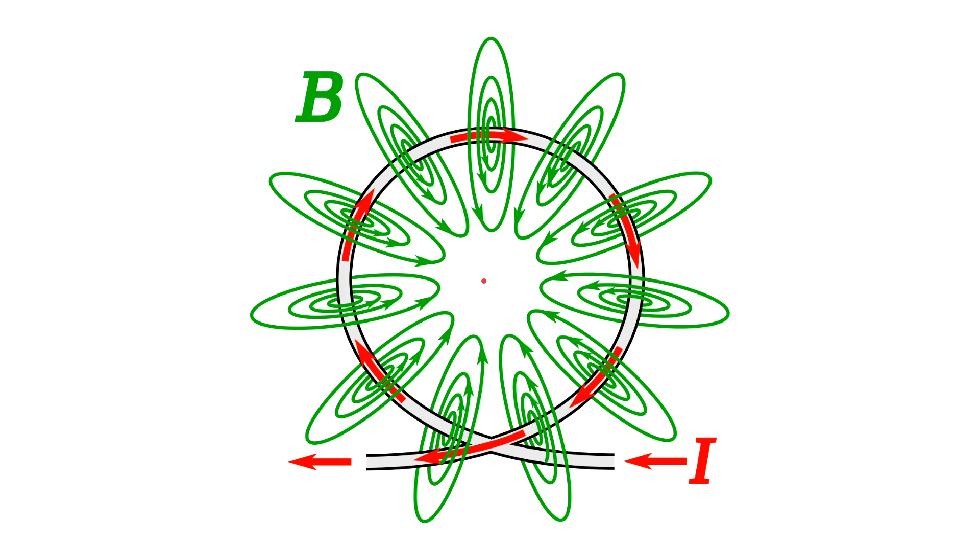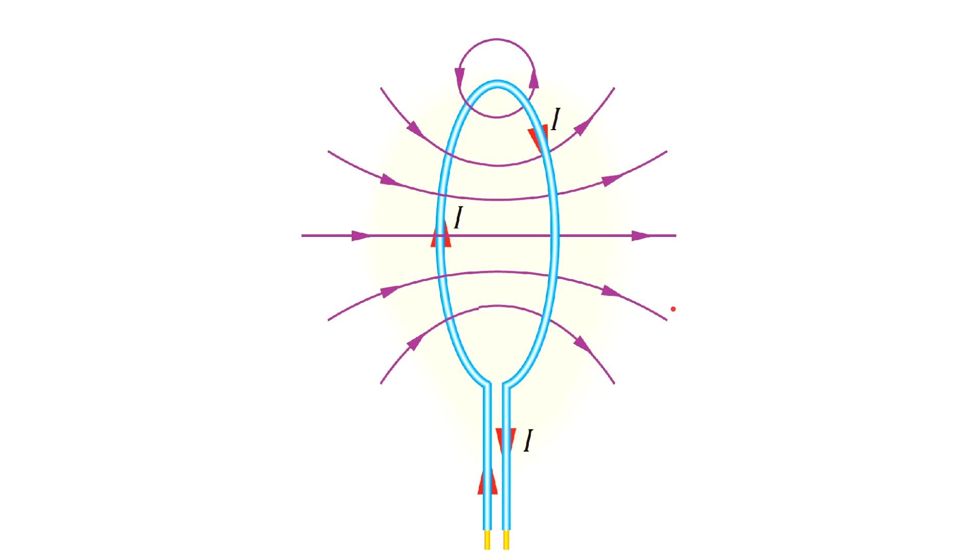Electric current in a circular loop creates a magnetic field which is more concentrated in the center of the loop than outside of the loop. So that's why we see this kind of picture.